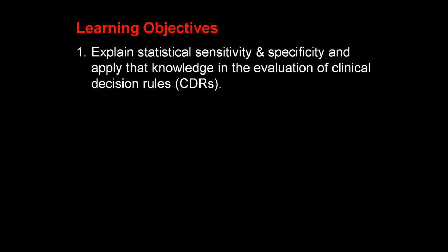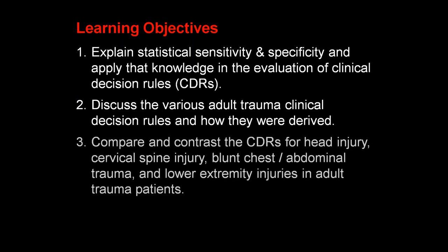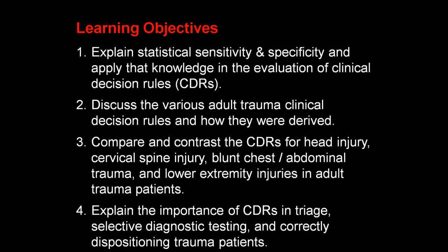Our objectives today: explain statistical sensitivity and specificity and apply that knowledge in the evaluation of clinical decision rules. Discuss the various adult trauma clinical decision rules and how they were derived. Compare and contrast the rules for head injury, neck injury, chest and abdominal trauma, as well as lower extremity injuries in adult trauma patients. And finally, talk about the importance of CDRs in triage, diagnostic testing, and correctly dispositioning our trauma patients.